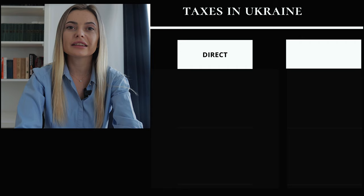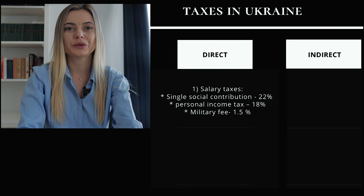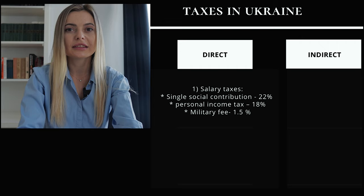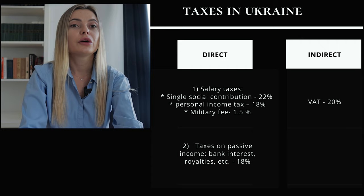Taxes in Ukraine can be divided into direct and indirect. The direct ones include salary taxes — these are taxes that the employer transfers to the budget from wages. These include single social contribution 22%, personal income tax 18%, and military fee 1.5%. Direct taxes also include taxes on passive income, such as bank interest or royalties.